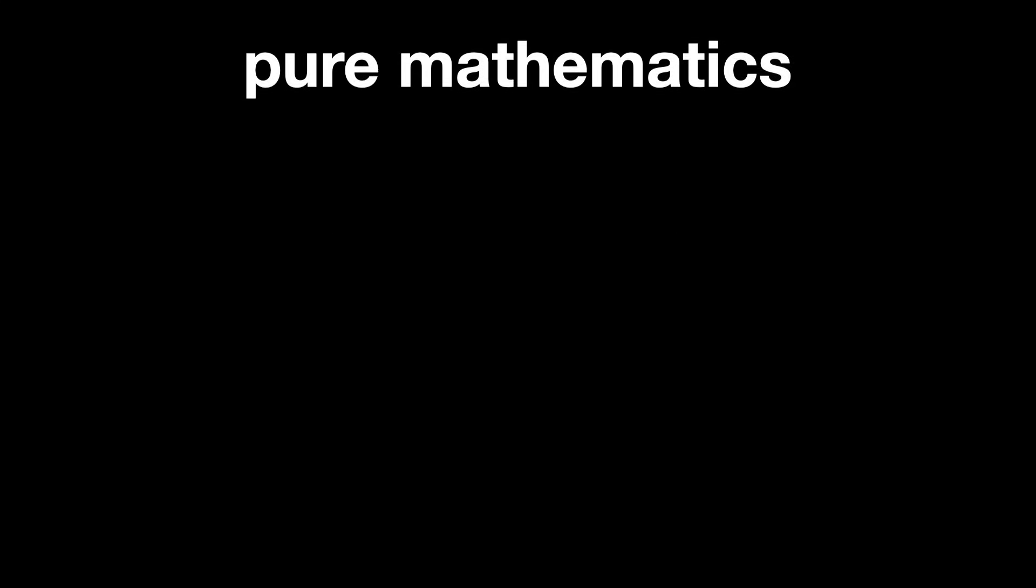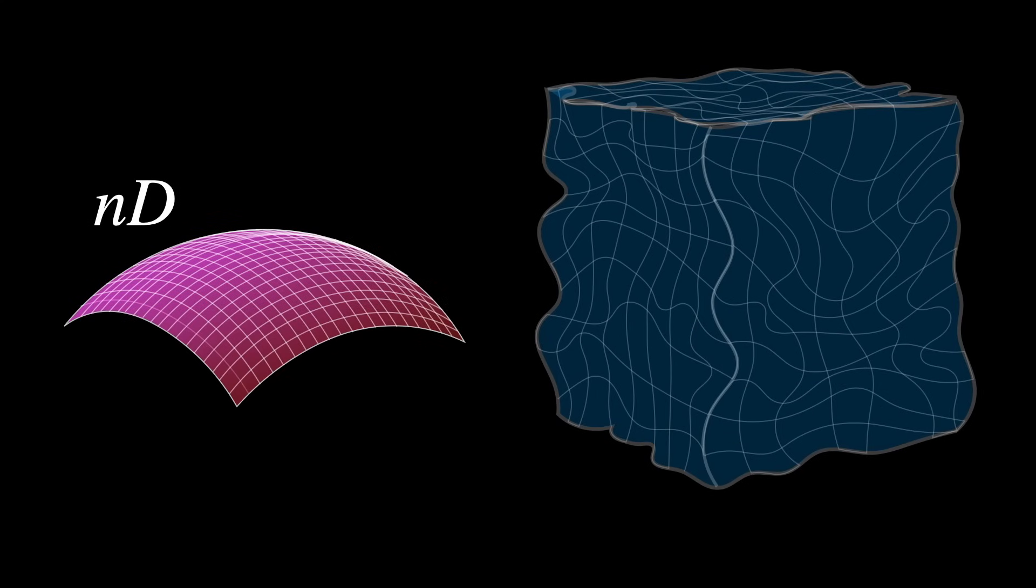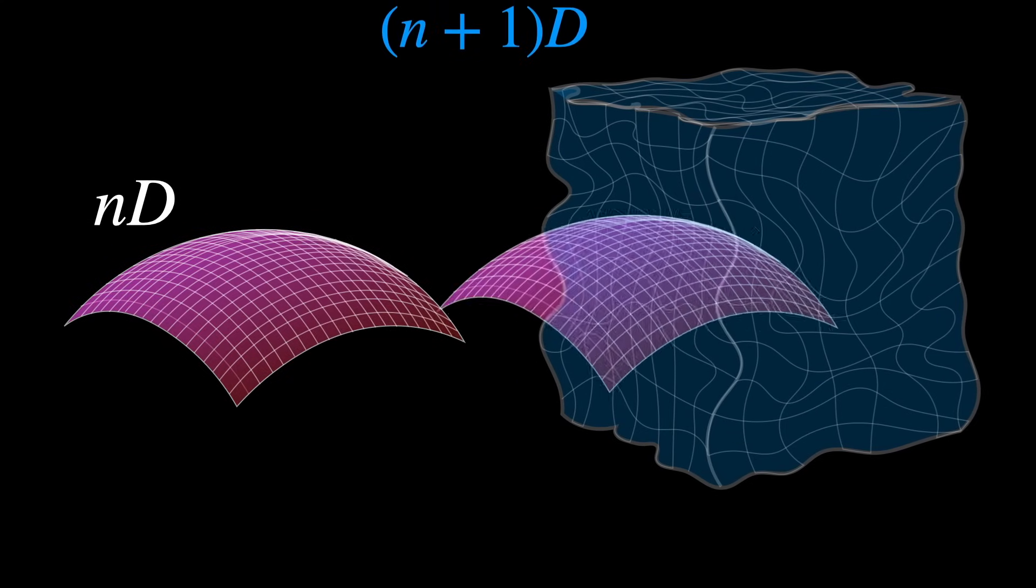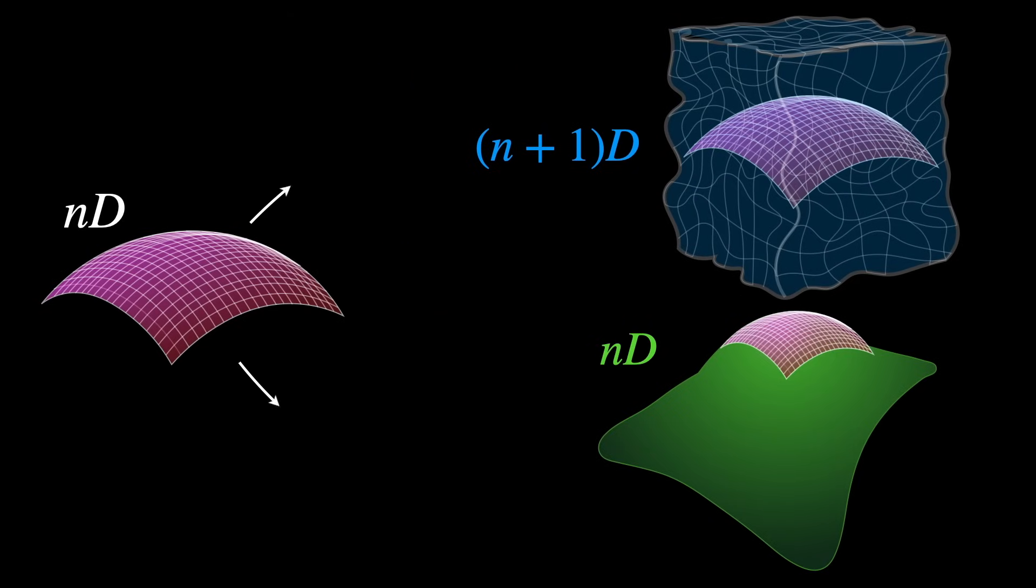In pure mathematics, if you take a space of dimension n, you can choose to embed it in a higher dimensional space, say n plus 1 dimensions, or more. Or even in a space with the same dimension n. This larger space is called the ambient space.